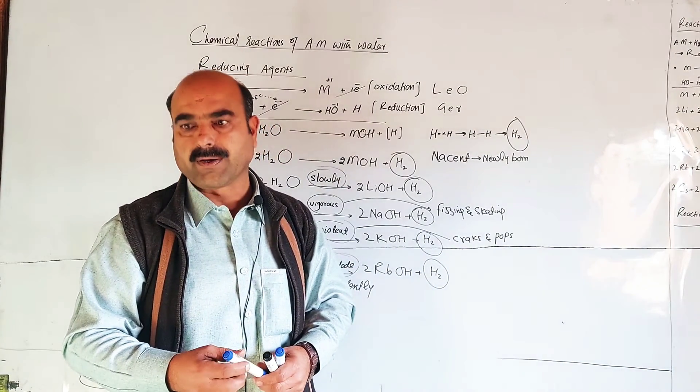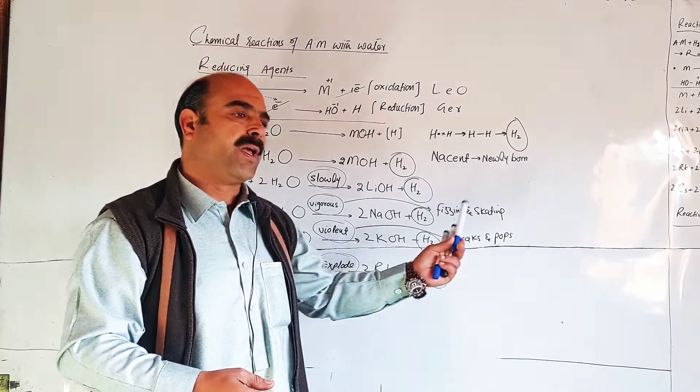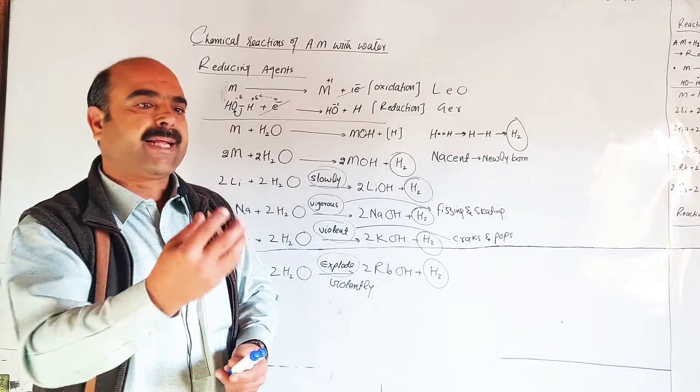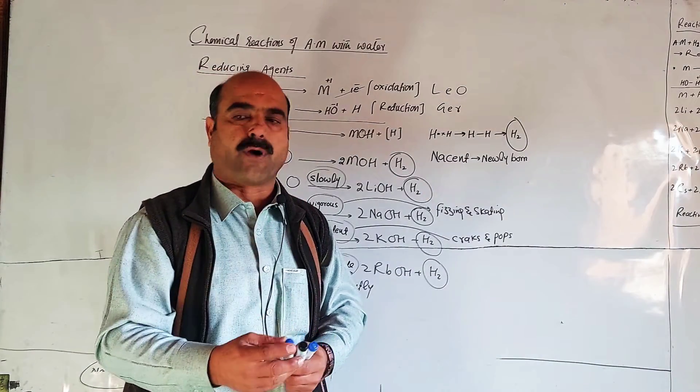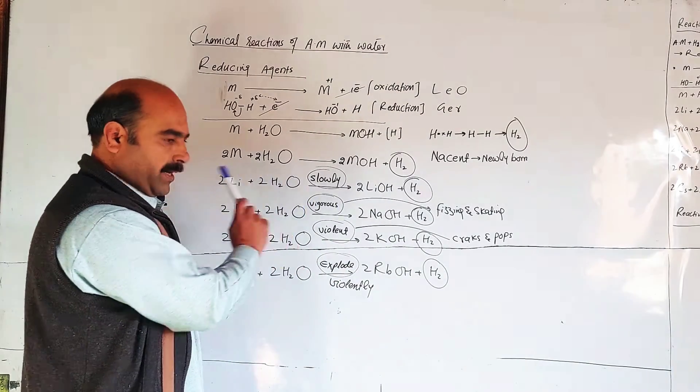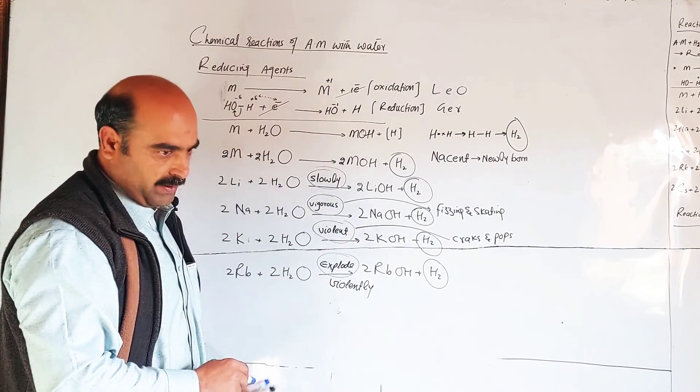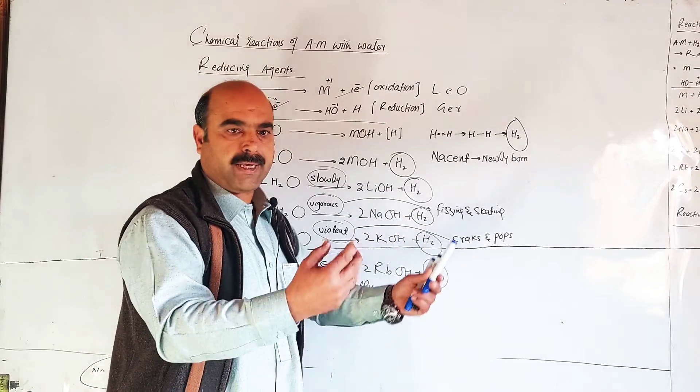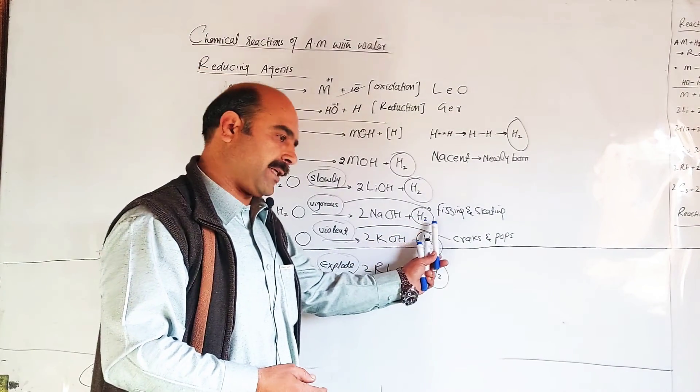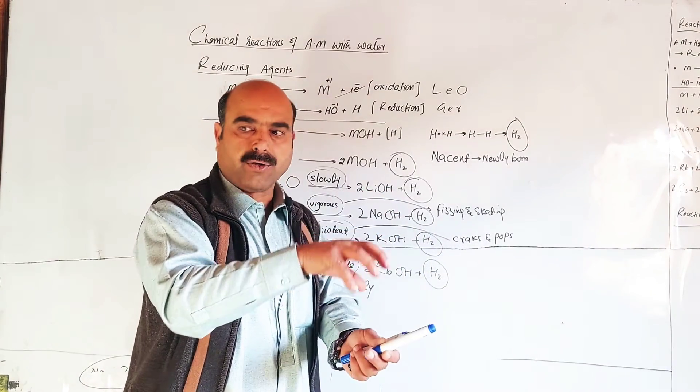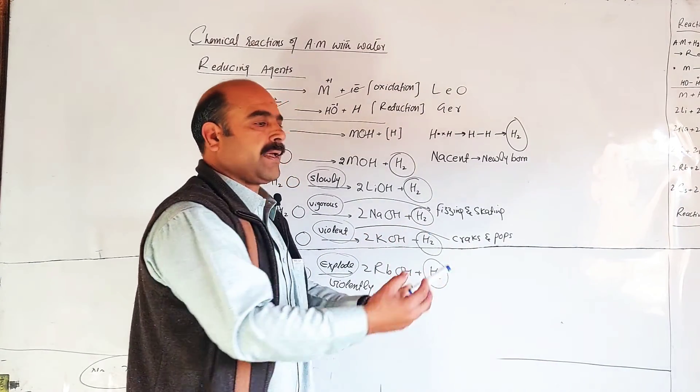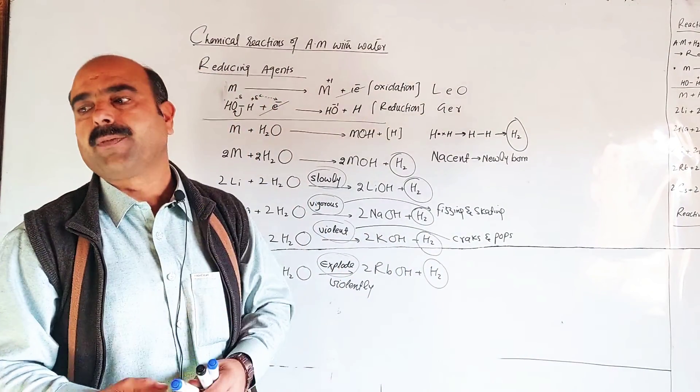When sodium metal is put into water, it floats on the surface. Why? When sodium is put into water, it reacts to form sodium hydroxide and hydrogen gas, and a large amount of heat is released. As hydrogen catches fire, heat is already present there, so it burns in the presence of heat and fire starts on the surface of water.